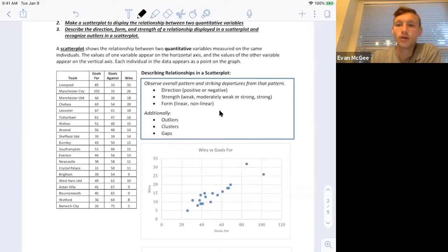So how do I describe this distribution or this scatter plot? The things that we definitely need to say are the direction, positive or negative. In this case, it's positive because as the number of goals increase, the number of wins increase. So it's positive.